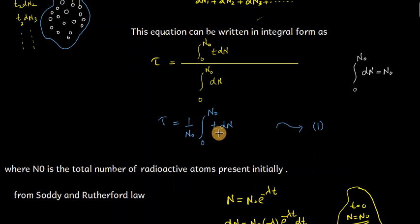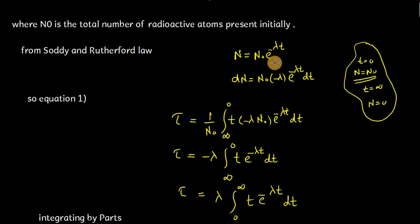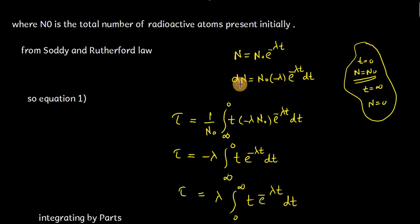Now we need to evaluate this integration. From radioactive decay law, we know that N equals N₀ e^(−λt), where λ is known as the disintegration constant. If we differentiate this, we obtain dN equals N₀ (−λ) e^(−λt) dt. This converts the integration in equation 1 from with respect to dN to with respect to dt. The limits also change: when n equals N₀, time t equals zero; when time t approaches infinity, n equals zero.